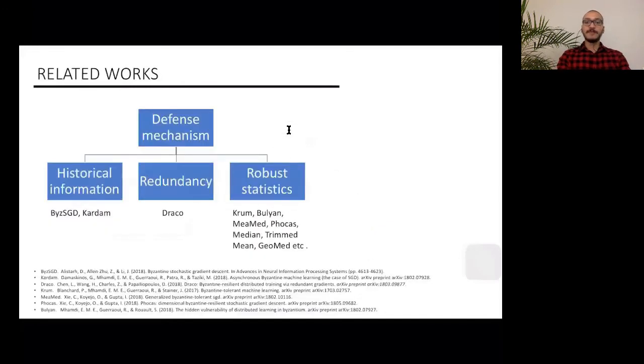From what we have seen, most defense mechanisms can be categorized as follows. You have aggregation rules that use historical information to filter the dead work while progressing with each iteration. You also have some methods that rely on redundancy, which is the classical way to deal with failures. And you have aggregation rules based on robust statistics. Our work falls into this last category.